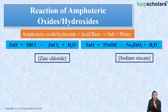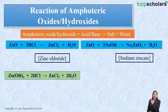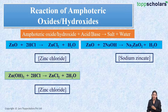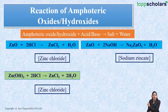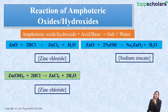Let's take some more examples. Here I have zinc hydroxide, which reacts with an acid — hydrochloric acid — and what you get is salt and water: zinc chloride and water. Since zinc hydroxide reacts with an acid to give salt and water, it behaves as a base here.